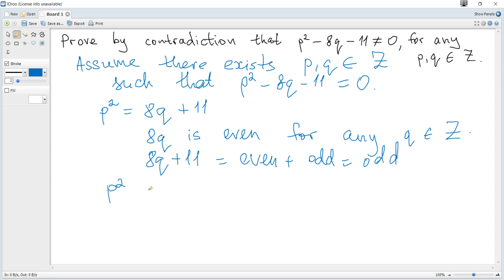And hence P² is odd, which means that P is also odd. For example, if P² = 25, then P = 5. And if P is odd, let P = 2K + 1, where K is also an integer.